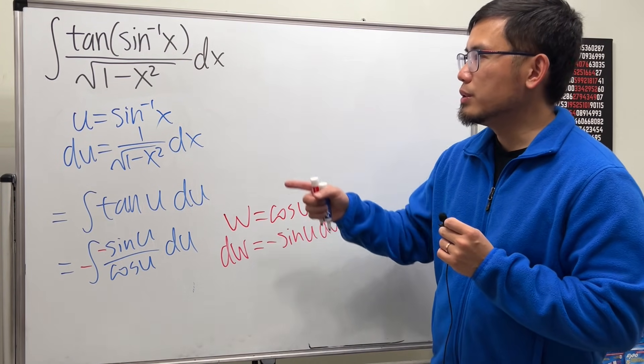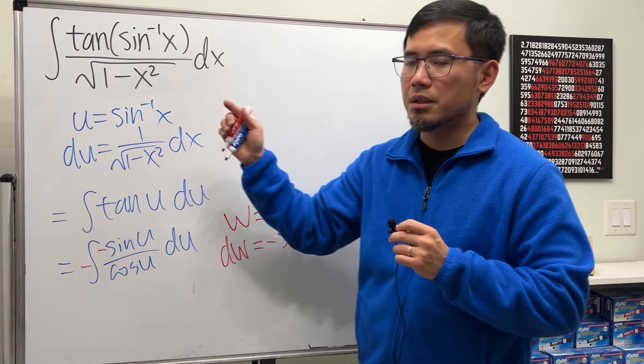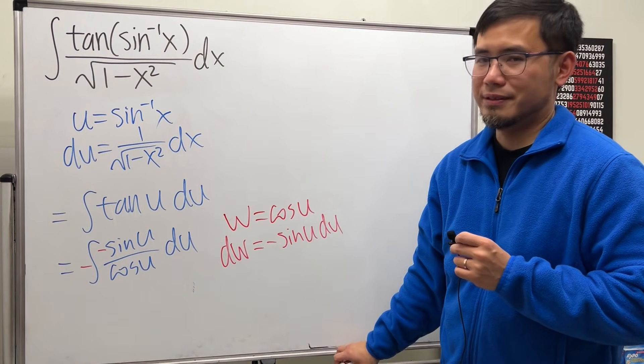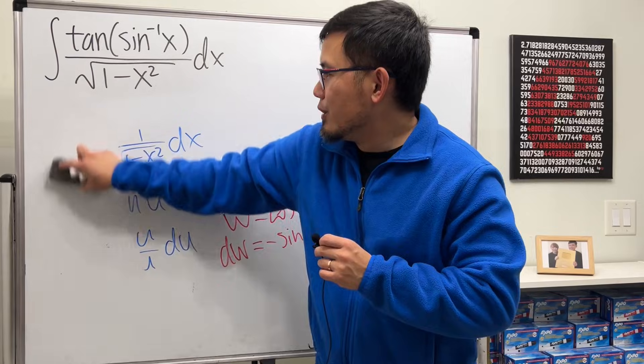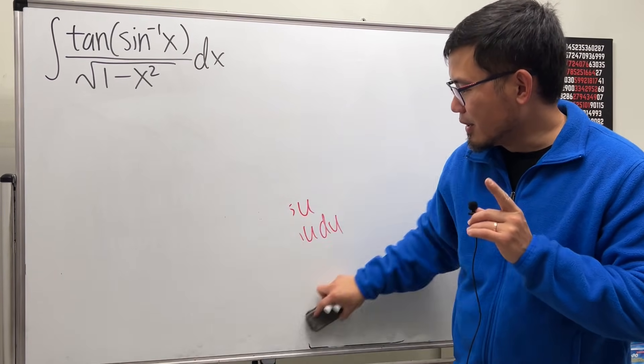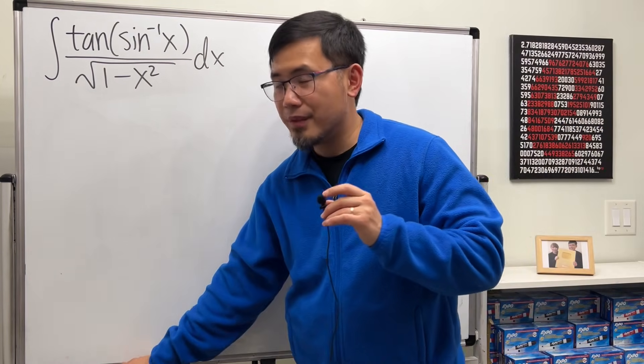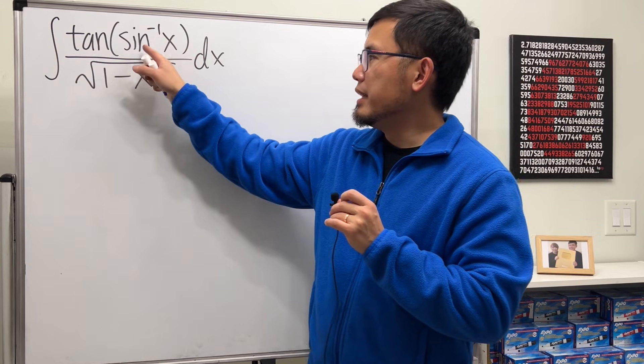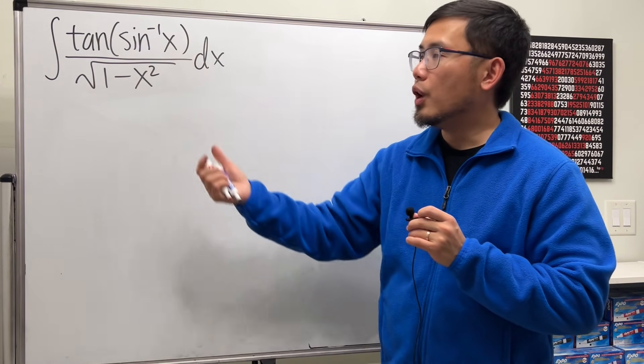So a much better way is to try to simplify the expression in the beginning before you do any calculus. All right, so don't do that. Here's the deal: whenever we have a trig function and then inside an inverse trig function, we can always write this as a radical expression.